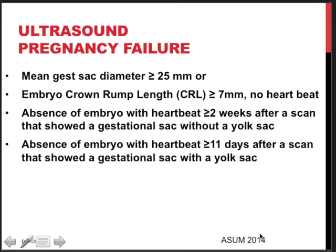There are a number of ultrasound features that point at pregnancy failure — meaning the pregnancy is lost and there is no more hope. Firstly, if the mean gestational sac diameter is more than 25 millimeters with no embryo visible, that means pregnancy failure. If we visualize a crown-rump length of 7 millimeters or more without a heartbeat, the same conclusion must be drawn. When these criteria are met, it is important that we break bad news with empathy and not delay by repeating a scan one week later — tell her, unfortunately, the baby has died.